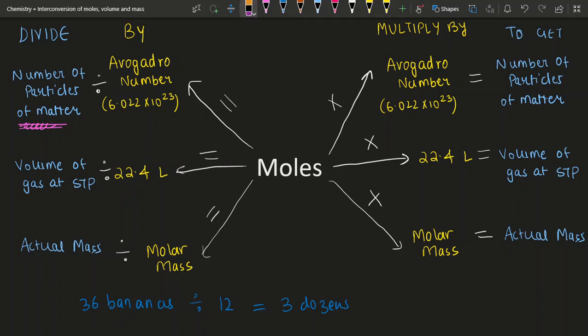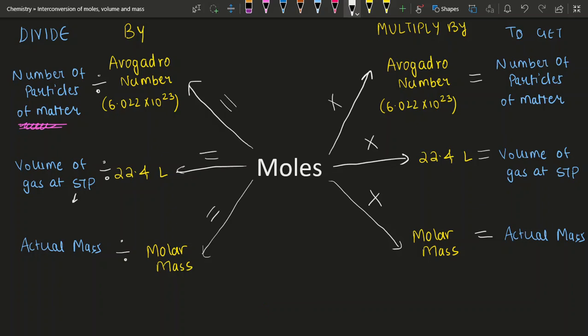Similarly, you take the volume of a gas at STP. STP is 0 degrees Celsius and 1 bar of pressure. At this standard temperature and pressure, the volume of 1 mole of gas is 22.4 liters. So if you take the volume of gas and divide it by 22.4 liters, you get the number of moles. Similarly, the molar mass is the mass of 1 mole. So if you have the actual mass and divide it by the molar mass, you get the number of moles.